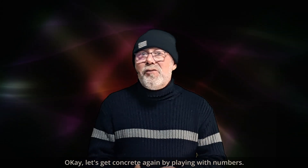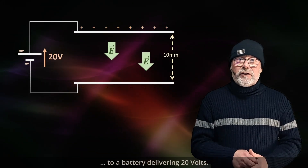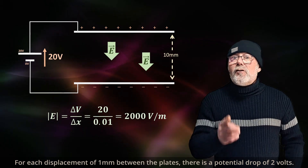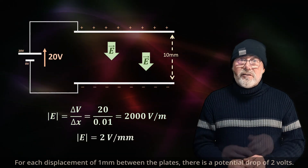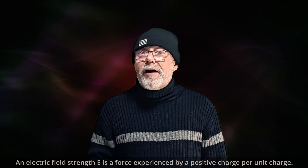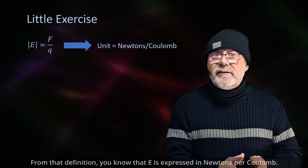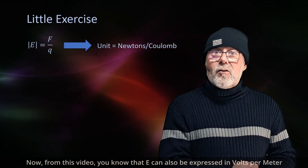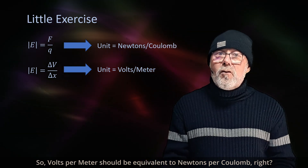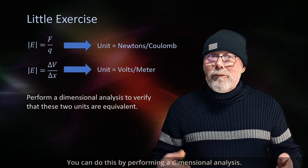Let's get concrete again with numbers. Imagine connecting two plates distanced 10 mm from each other to a battery delivering 20 volts. Therefore, 20 divided by 0.01 is 2000 volts per meter. For each displacement of 1 mm between the plates, there is a potential drop of 2 volts. From that you can generate a scale of the electric potential across the plates. The electric field strength E is the force experienced by a positive charge per unit charge, expressed in newtons per coulomb — but from this video you also know E can be expressed in volts per meter. So volts per meter should be equivalent to newtons per coulomb, and as an exercise, convince yourself of that through dimensional analysis.